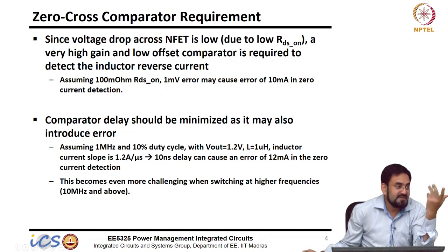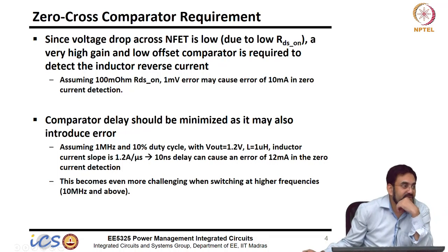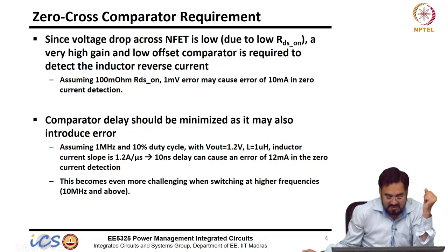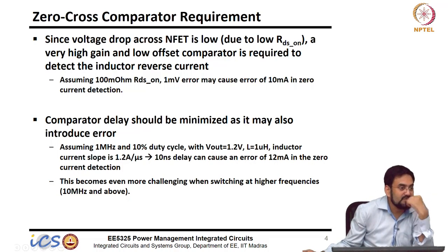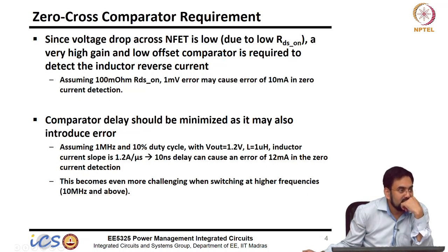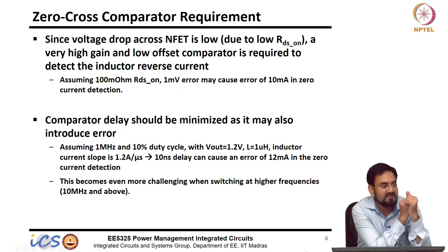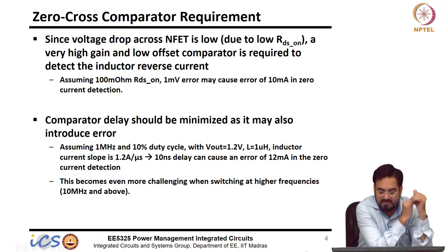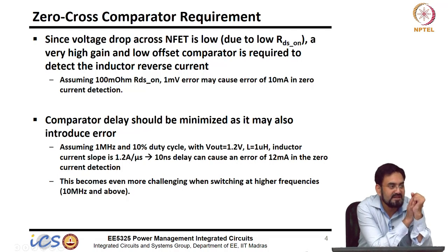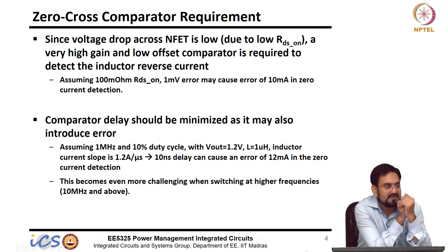If you increase the frequency to 10 megahertz, then 1 nanosecond will cause a 10 percent delay. You would be looking for on the order of hundreds of picoseconds — a very fast comparator. So first you have to get rid of the offset, make sure your comparator gain is very high, and delays should be minimized.